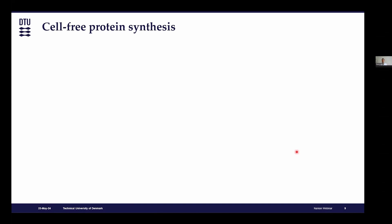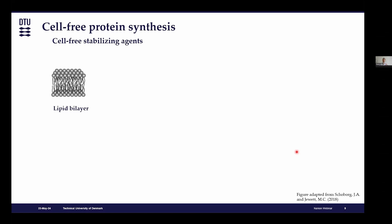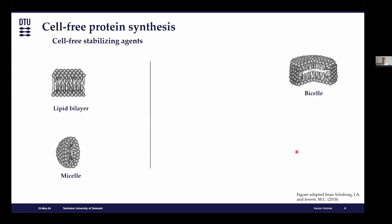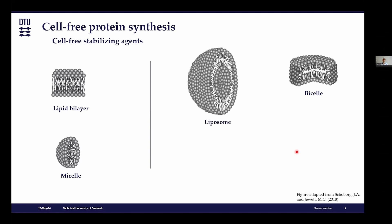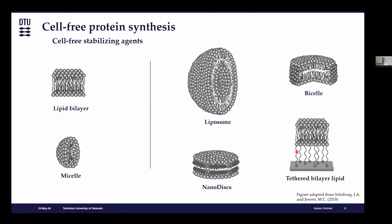To synthesize transporters, we also need stabilizing agents, since transporters are usually present in hydrophobic environments — we need to mimic this environment to have successful synthesis of a functional transporter. There is a variety of stabilizing agents: you can add detergent to form micelles, use bicelles, liposomes, nanodiscs — which is what we used in our application — or even more exotic approaches like tethering a lipid bilayer to a gold layer and synthesizing your transporter there.